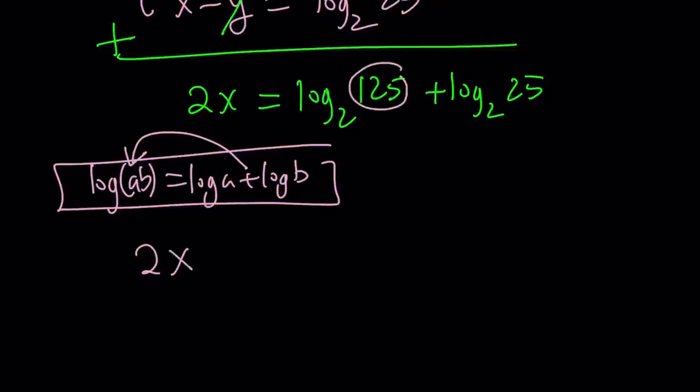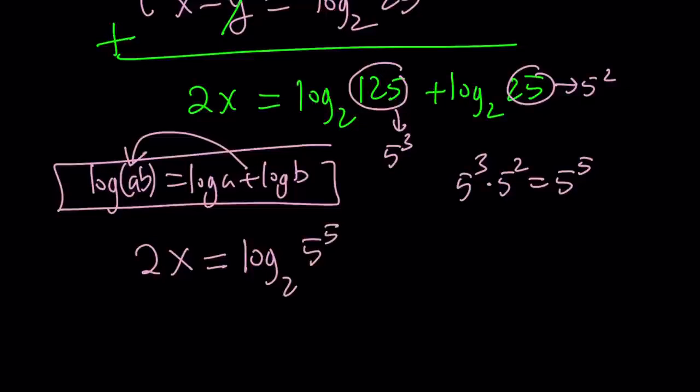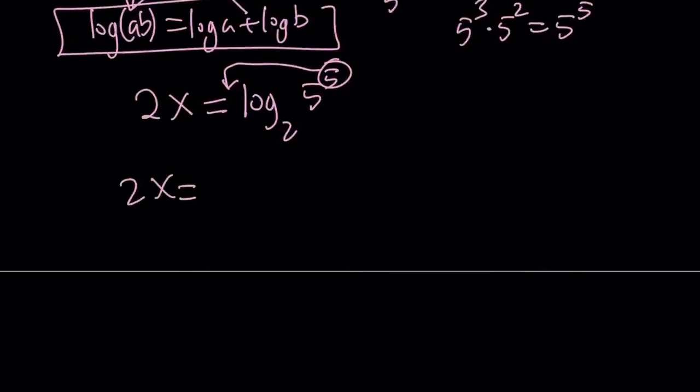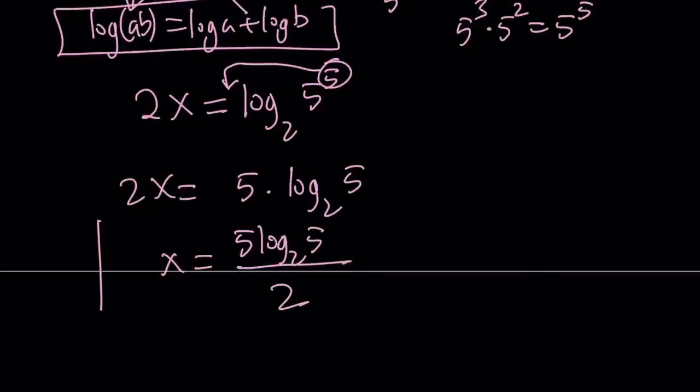To make it easier on us, let's write this as 5 to the third and this as 5 to the second. So when you multiply them, you get 5 to the fifth power. So 2x can be written as log 5 to the fifth, and you can move this 5 to the front. 2x equals 5 times log 5 with base 2. And now I can divide both sides by 2. x equals 5 times log 5 base 2 divided by 2.